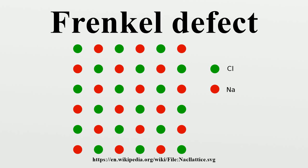Examples: It is shown in ionic solids with a large size difference between the anion and cation. Some examples of solids which exhibit Frenkel defect are ZnS, AgCl, AgBr — note that AgBr shows both Frenkel as well as Schottky defect — and AgI.